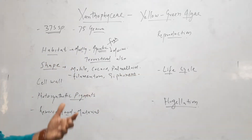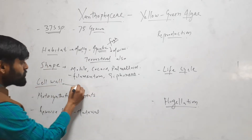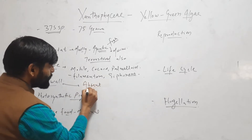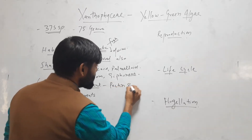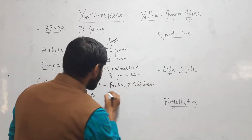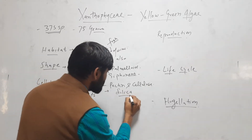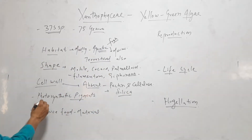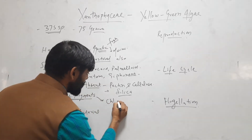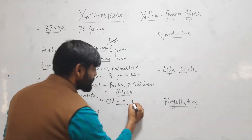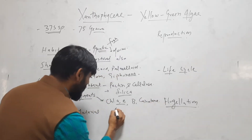The cell wall is usually absent, but when it is present, it is made up of pectin and cellulose, which is impregnated with silica. When we talk about photosynthetic pigments: chlorophyll A, chlorophyll E, beta-carotene, and xanthophyll are found in Xanthophyceae.